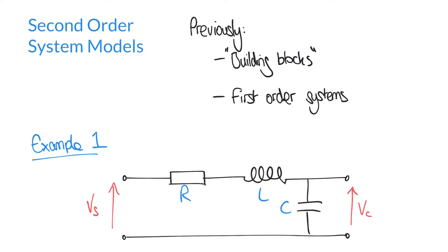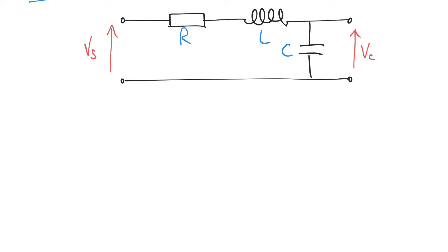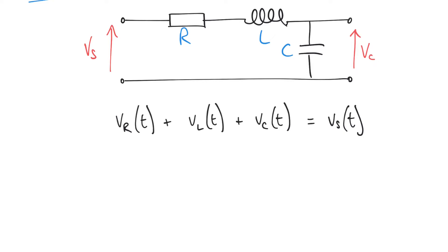So here's our first example: we're going to look at this circuit here, which is a series RLC circuit. There's a supply voltage VS supplied to this series circuit, and the output we're taking as the voltage measured across the capacitor VC. We're going to use Kirchhoff's voltage law to first assemble an equation to represent this system, and it's going to look like this: VR(t) plus VL(t) plus VC(t) equals VS(t). In other words, the voltages across each of these components must add up to the supply voltage — that's Kirchhoff's voltage law.